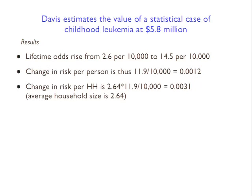You might be thinking: why are we multiplying by the number of adults in the household as well? I think the reason is that these lifetime odds are measured over the entire person's lifespan rather than just whether or not they got it as a child. You could potentially have done it differently by looking at just the number of children in each household and the odds of a child getting leukemia.